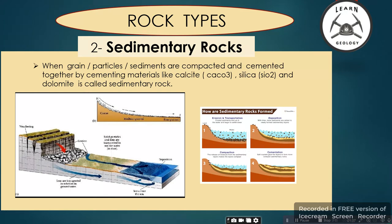The second type is sedimentary rock. When grain particles and sediments are compacted and cemented together by cementing materials like calcite, silica, and dolomite, it is called sedimentary rock.